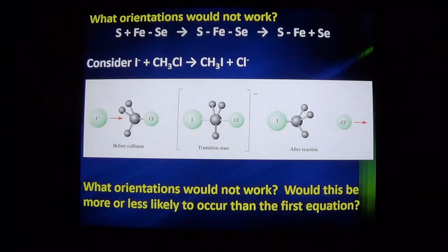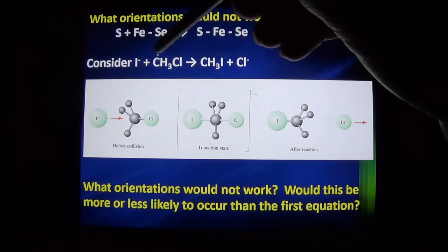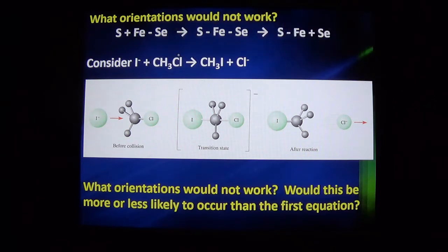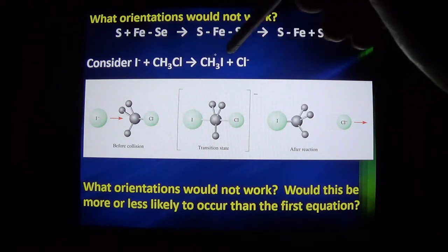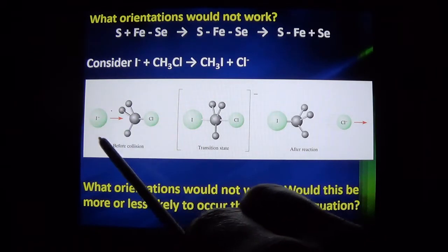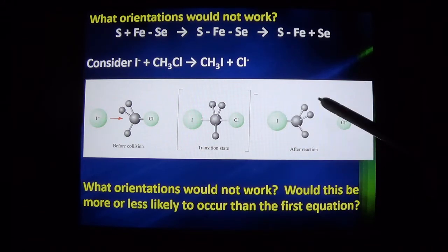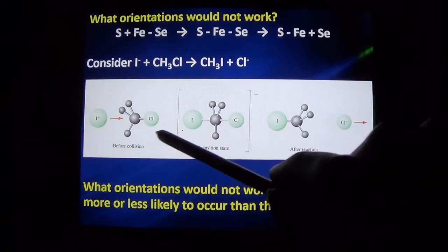Now let's consider something a little more challenging. Iodite ion attacking a CH3Cl, so it's kind of like methane but with Cl instead of H there. Then the iodine attaches to the C and removes the Cl. Here's what it would look like before the collision, here's the transition state, and here's after the collision. This is like mostly guesswork based on the evidence that we might be able to find.